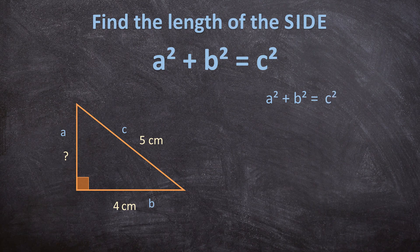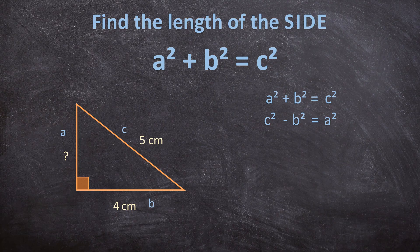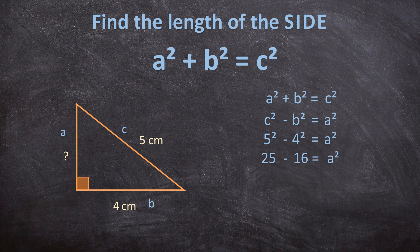A² plus B² is equal to C². But we don't want to calculate C — we want to calculate A. So C² minus B² gives us A². Filling in the values: 5² minus 4² equals A². That is 25 minus 16, which equals A². And 25 minus 16 is 9, so 9 equals A².